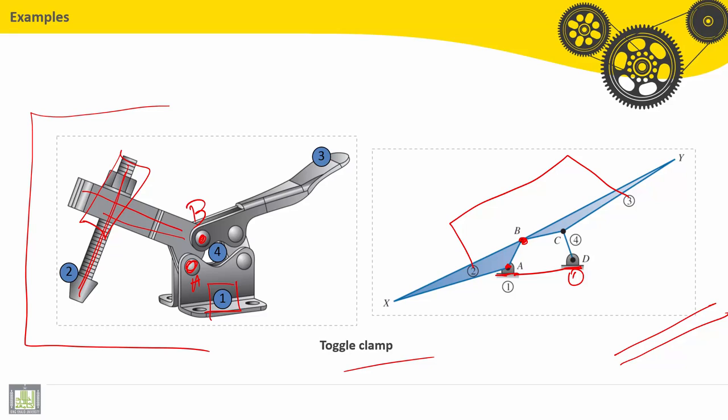For part number three, also similar to a triangle. In addition to revolute B with link number two, it has a revolute joint with part or link number four.